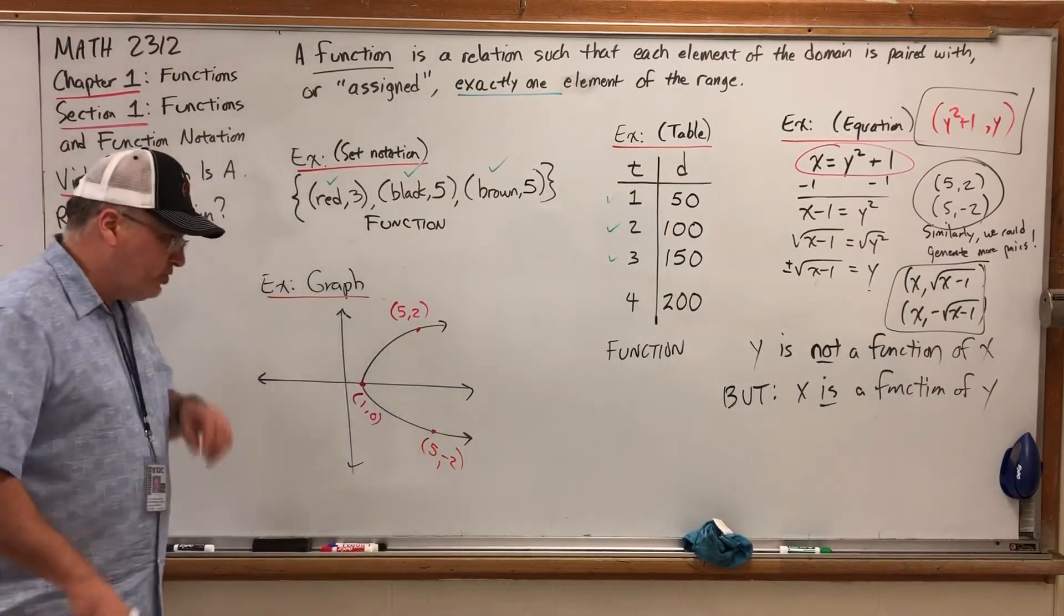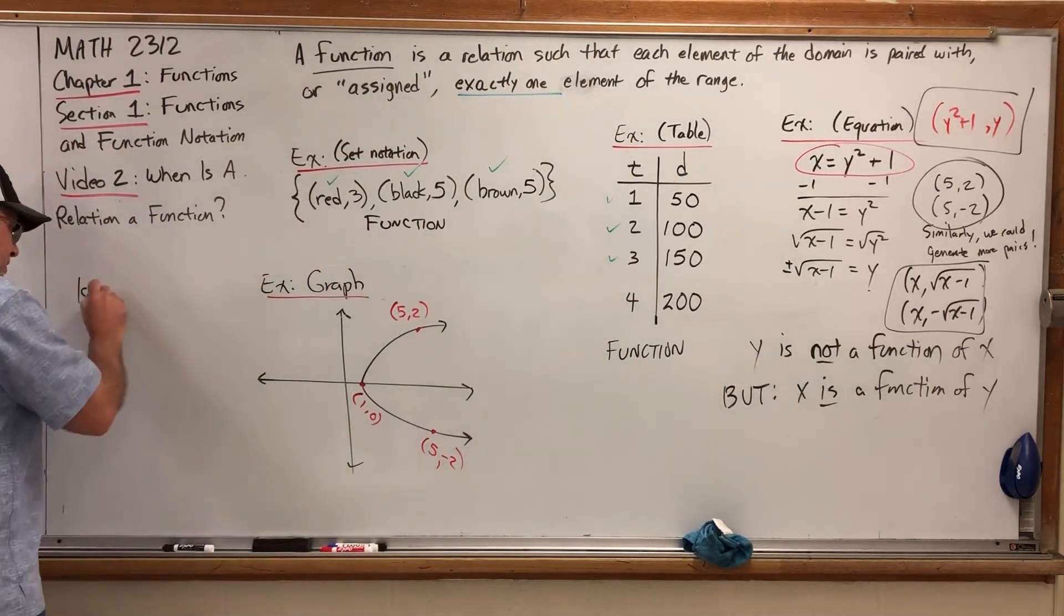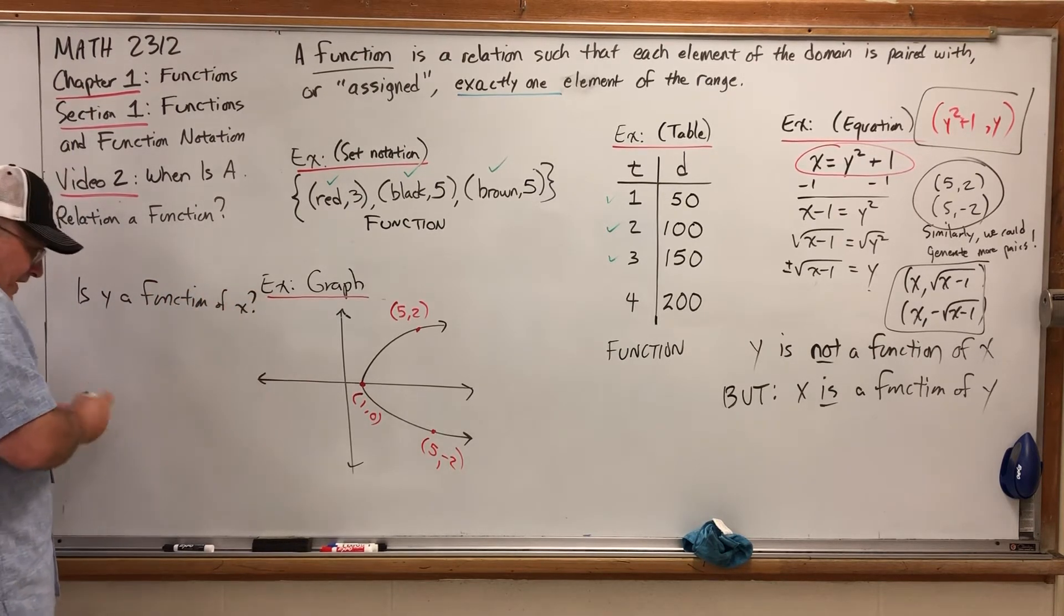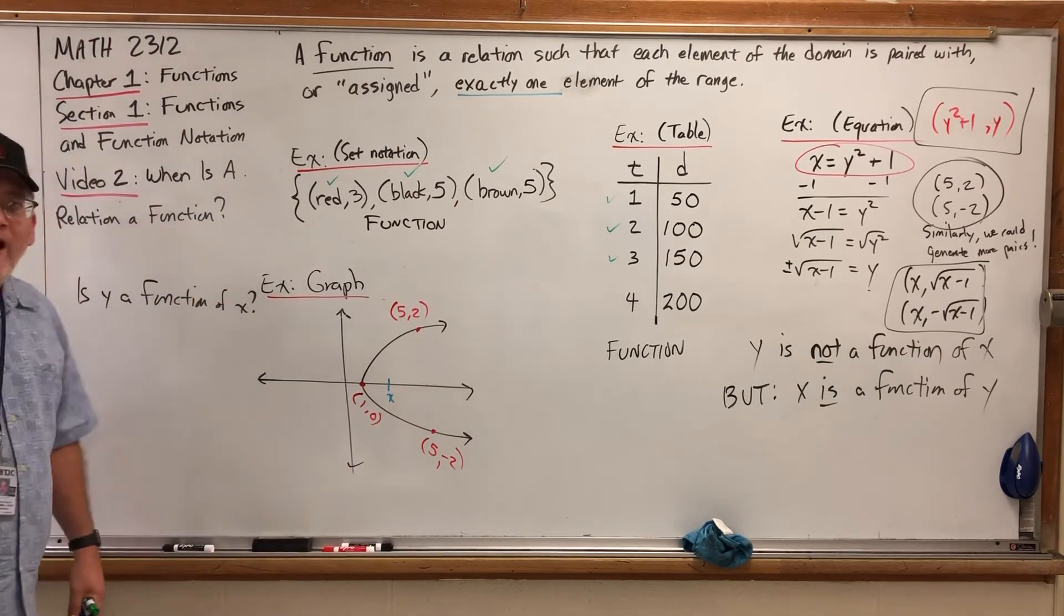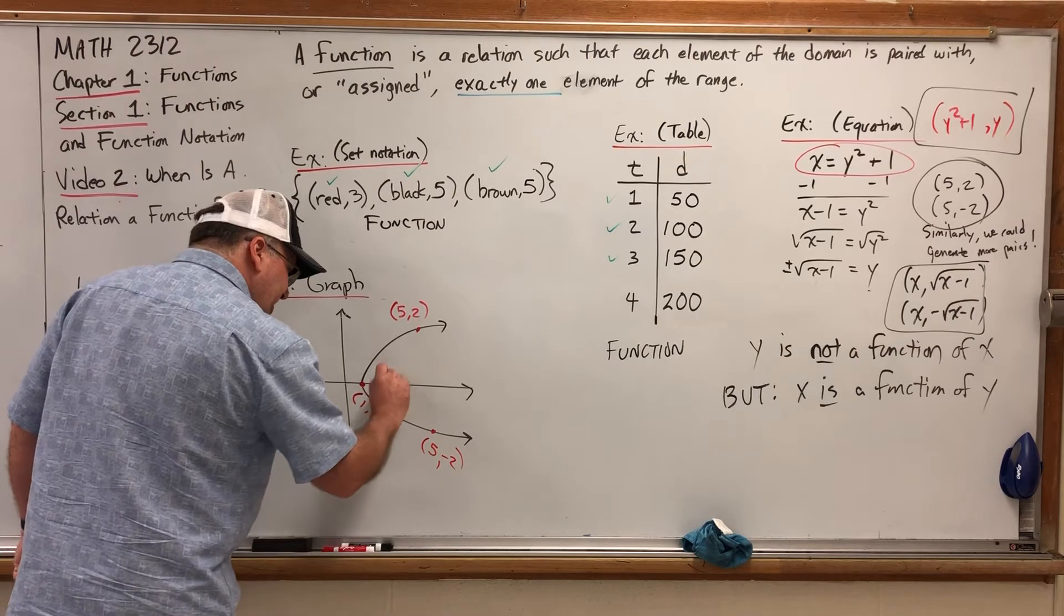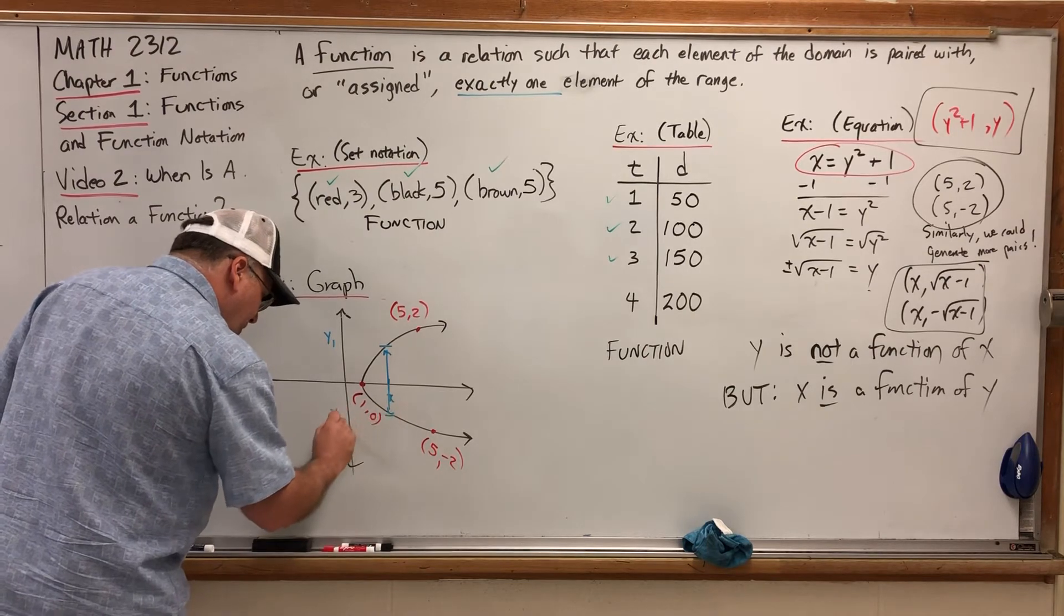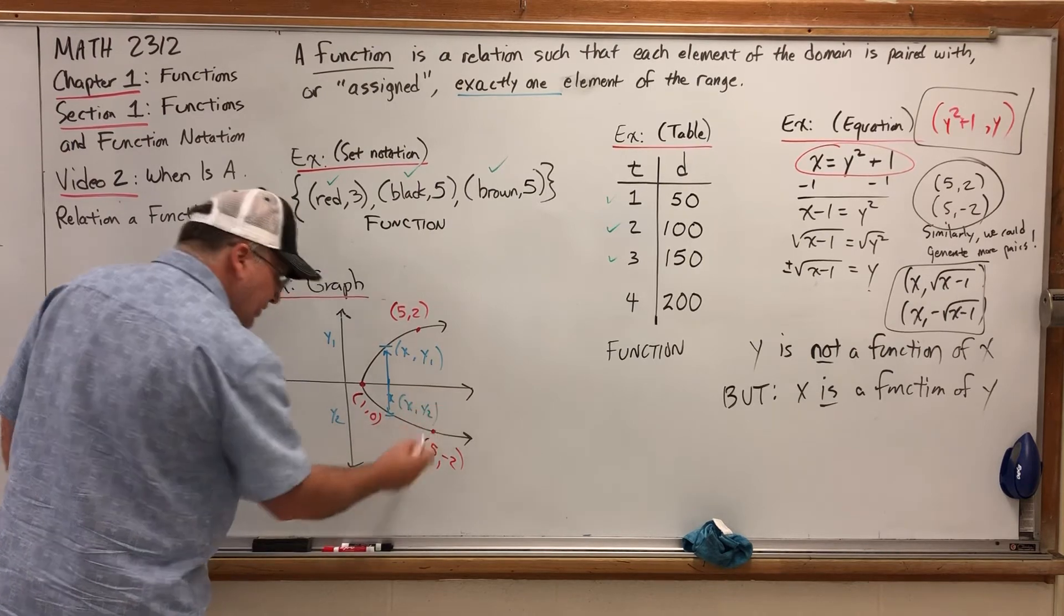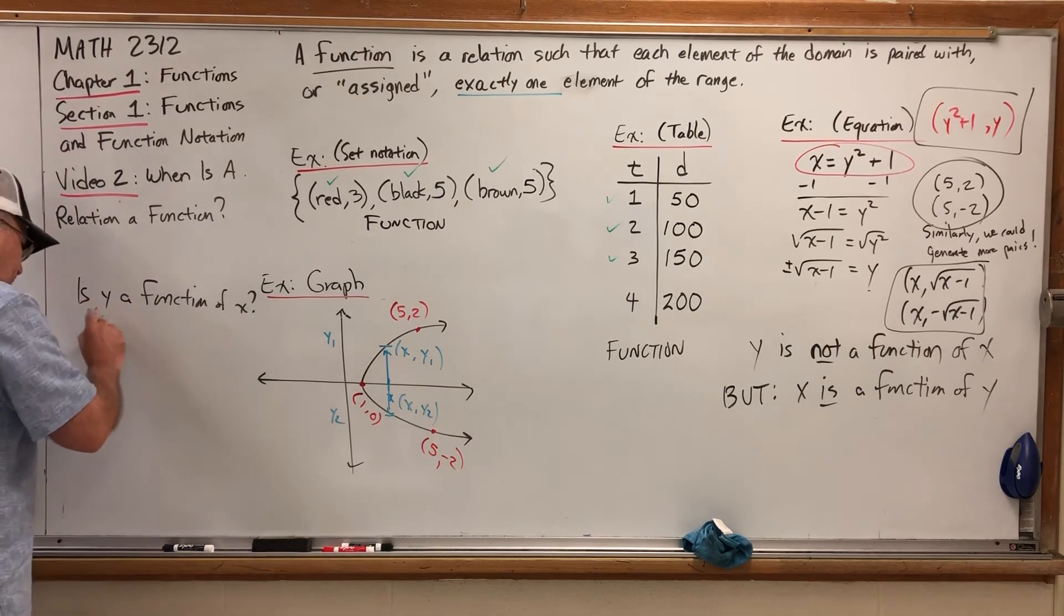As far as graphs, it's a real easy way, if we're answering the question, is Y a function of X? Meaning, if I go over to a single X value like this one, is there only one Y paired with it? Well, in this case, no. Because if I go over to this X value, I'll get a Y up here, we'll call it Y1. But I'll also have a Y down here, we'll call it Y2. Because these two points have the same X but different Ys, assuming X is the domain, then no.